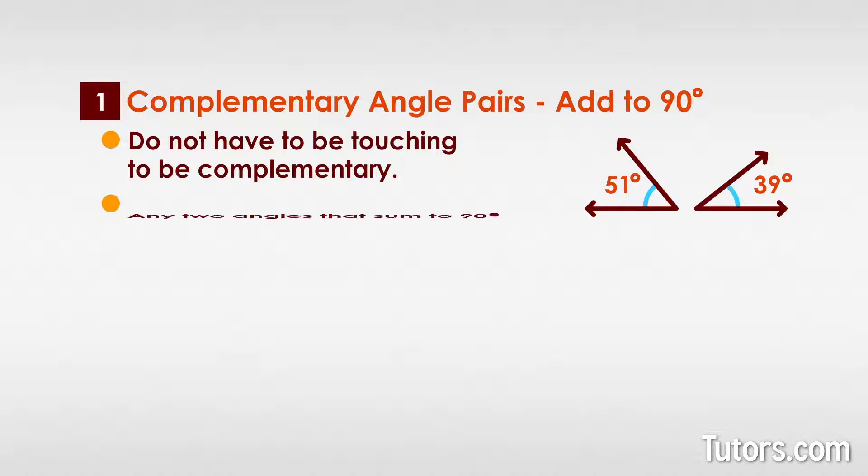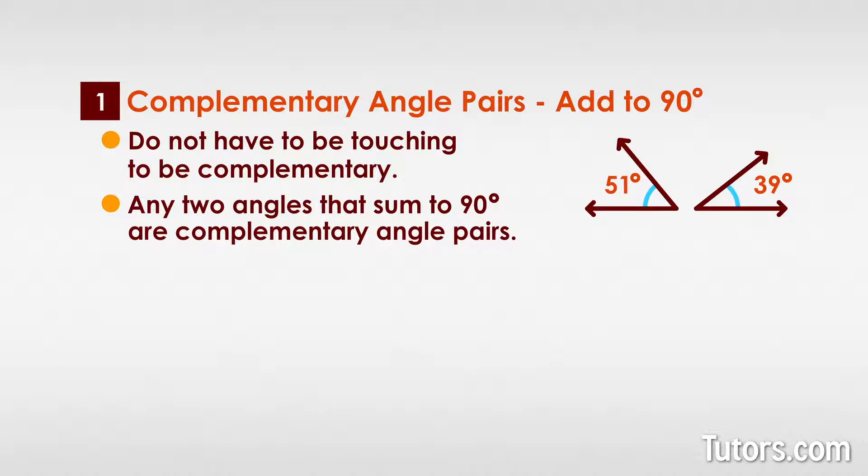Complementary angle pairs add to 90 degrees. These pairs do not have to be touching to be complementary. Any two angles that sum to 90 degrees are complementary angle pairs.